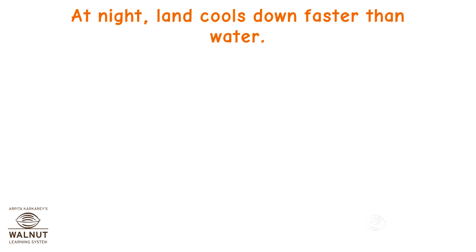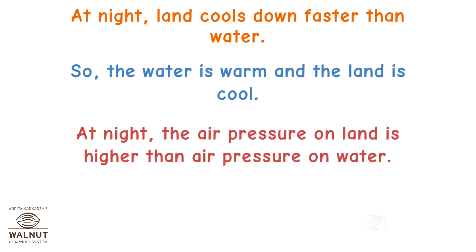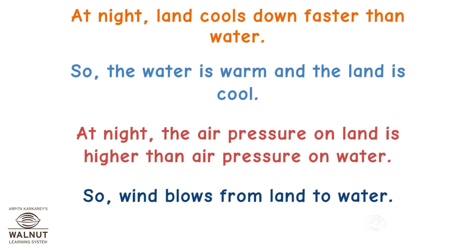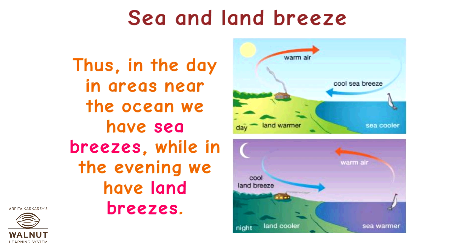At night, land cools down faster than water, so the water is warm and the land is cool. At night, the air pressure on land is higher than air pressure on water, so wind blows from land to water. This wind is called a land breeze since it comes from the land. Thus, in the day, in areas near the ocean, we have sea breezes, while in the evening we have land breezes.